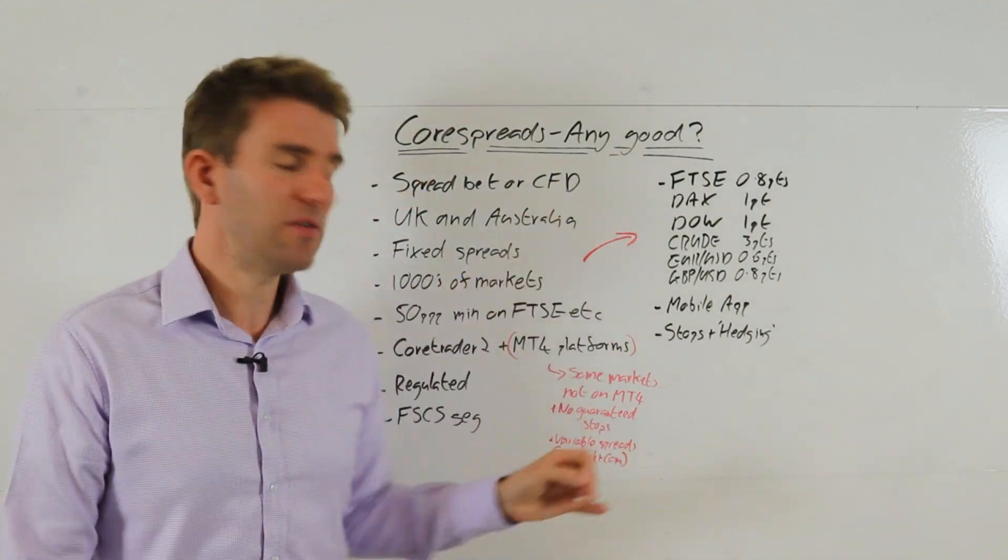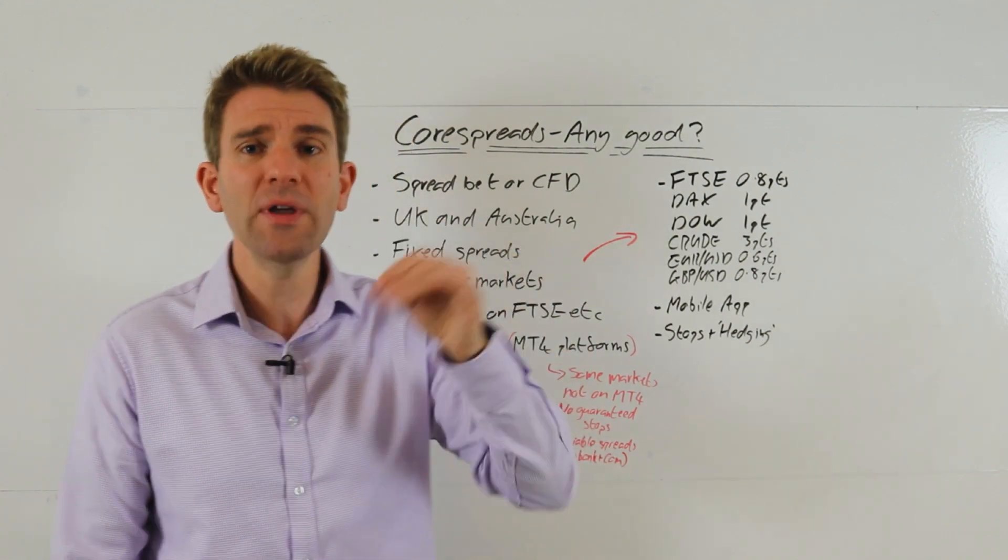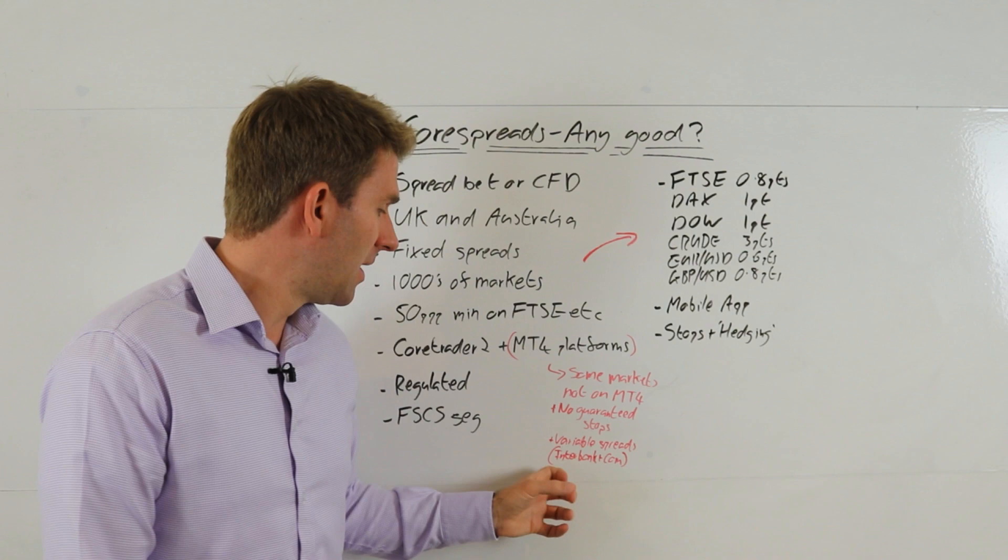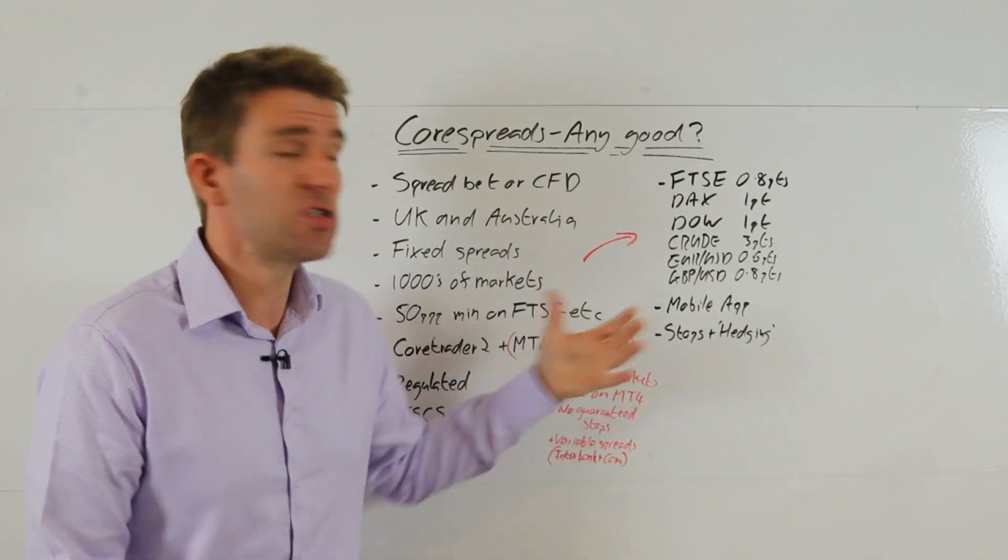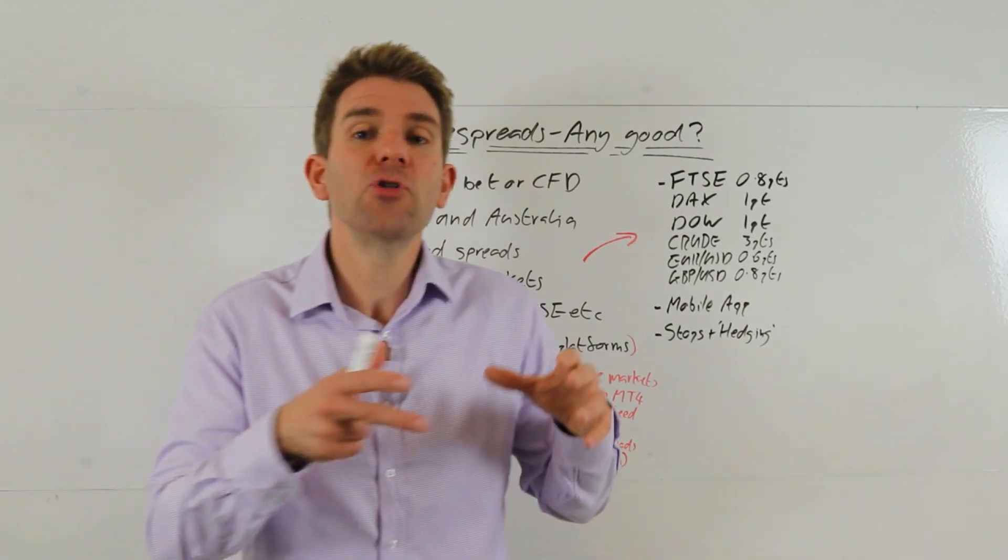Regulated, etc. Right, so the other thing to note guys: MT4 platform - some of the markets aren't available that they are on the Core Trader 2 platform. You don't get guaranteed stops - we'll look at some of the stops and all as they offer in a moment. And there's variable spreads we've talked about, so interbank rate plus a commission. But it's nice that it's offered and I know MT4 is important to a lot of traders.